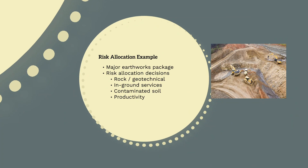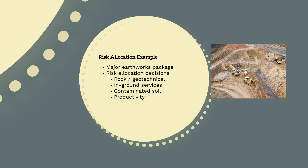Let's imagine a brief example where we're working as a project engineer procuring an earthworks package. You need to define in the scope of works who is responsible for some of the key risks faced during delivery. Pause the video and spend 5 minutes writing down some of the things that could go wrong — for example, what would happen if the geotechnical conditions were different than expected, if there are unknown in-ground services such as gas or electricity, or if productivity is lower than expected. These are all examples of risks that need to be defined in the contract.